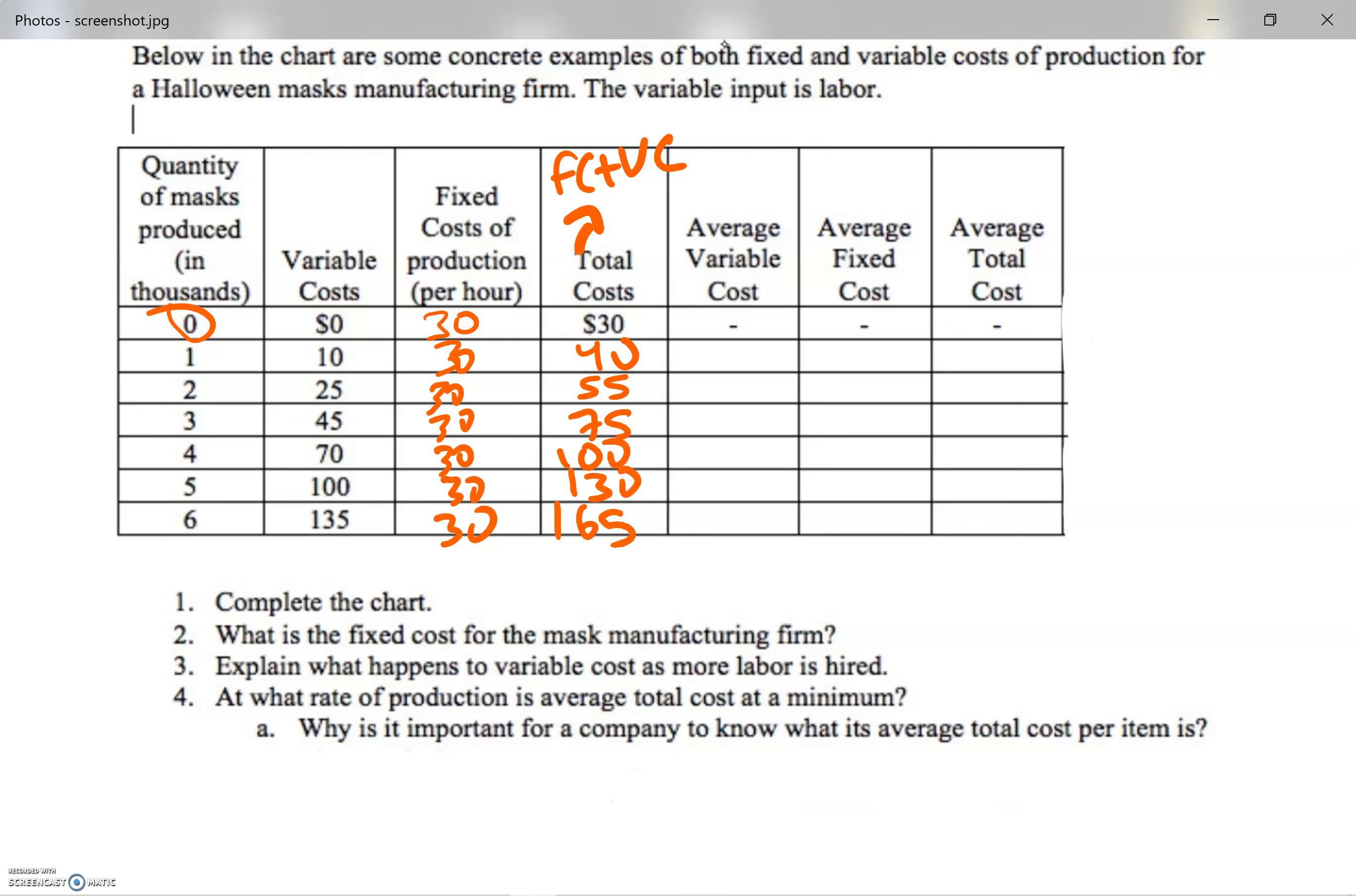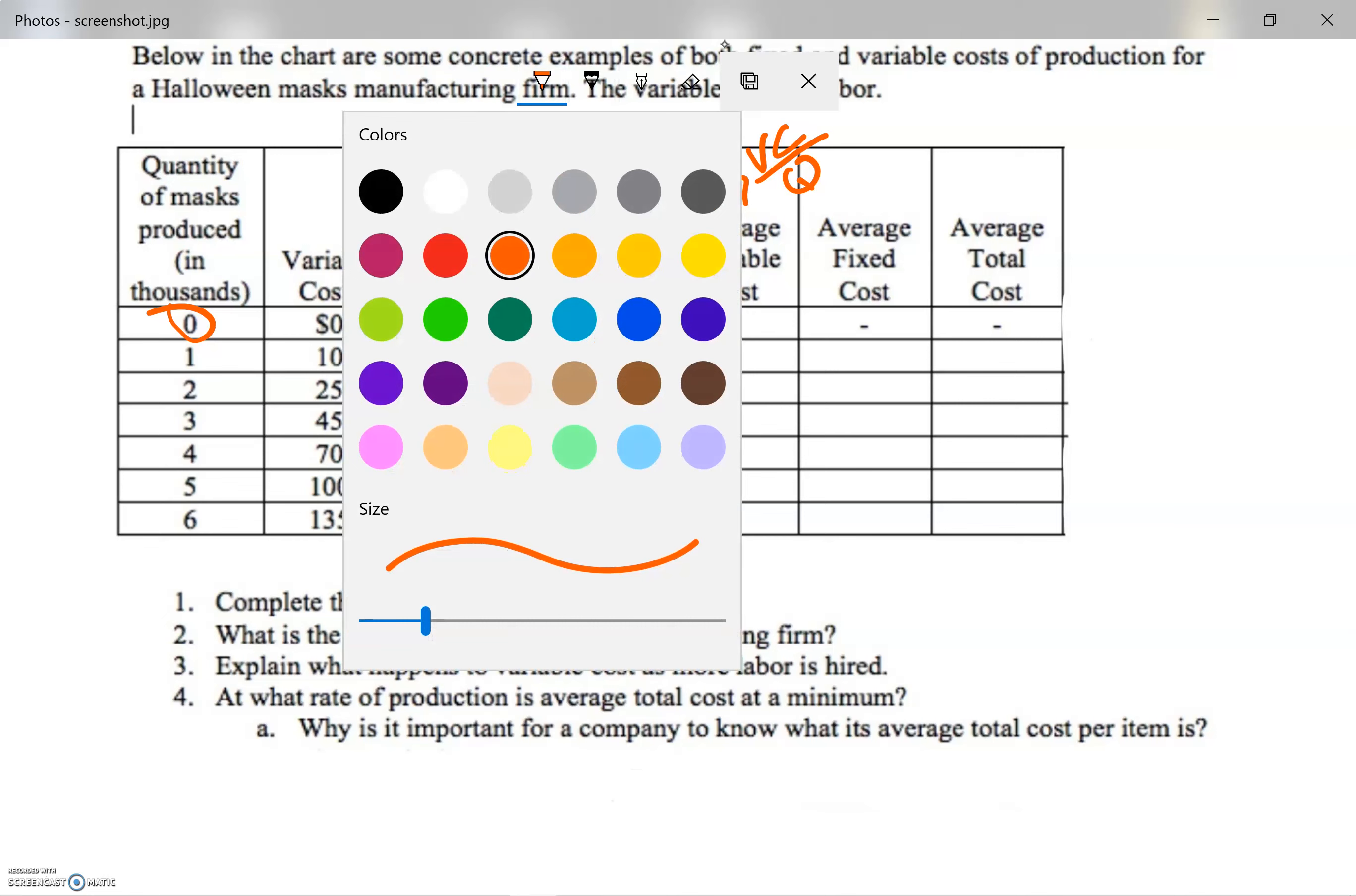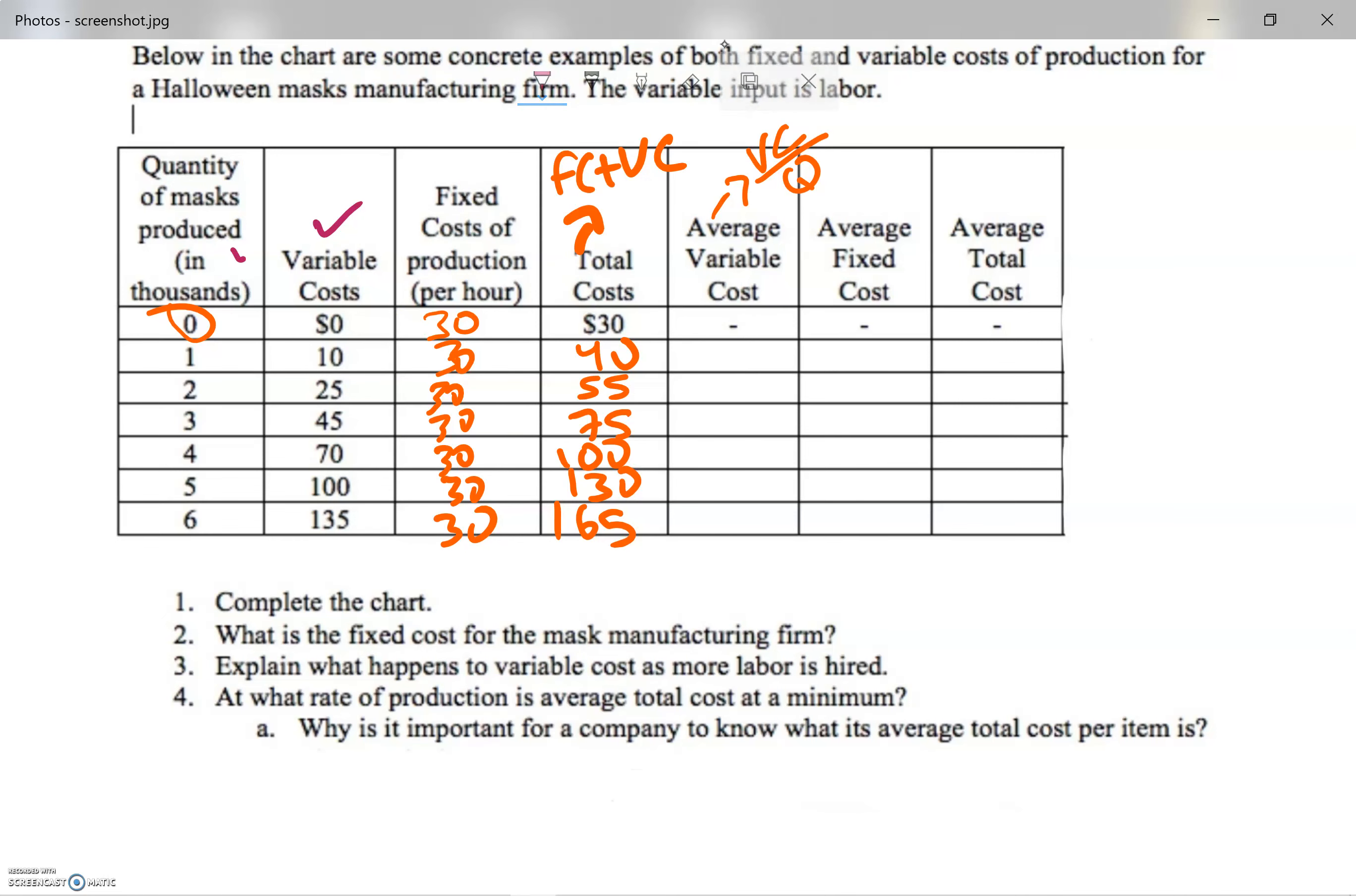Okay, and average variable cost - I do variable cost divided by the quantity. So I need to look at the variable cost and the quantity. 0 divided by 0 - impossible. 10 divided by 1 is 10. 25 divided by 2 is 12.5, and so on. So this would be 15, 17.5, 20, and 22.5.